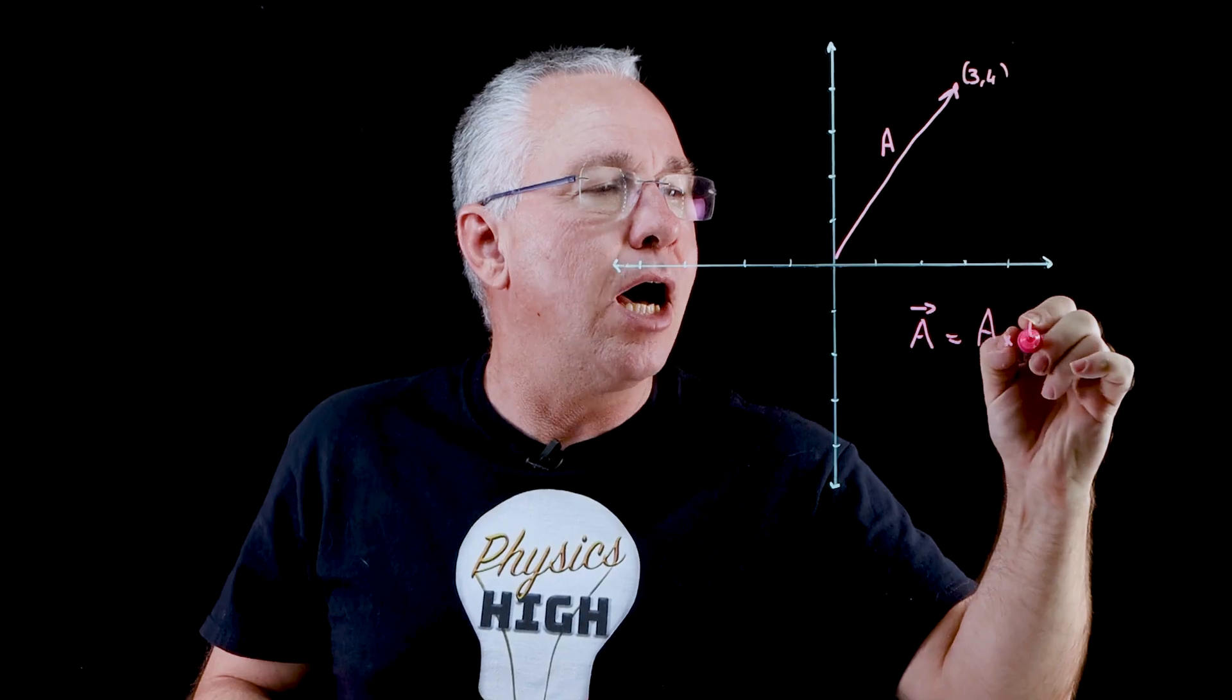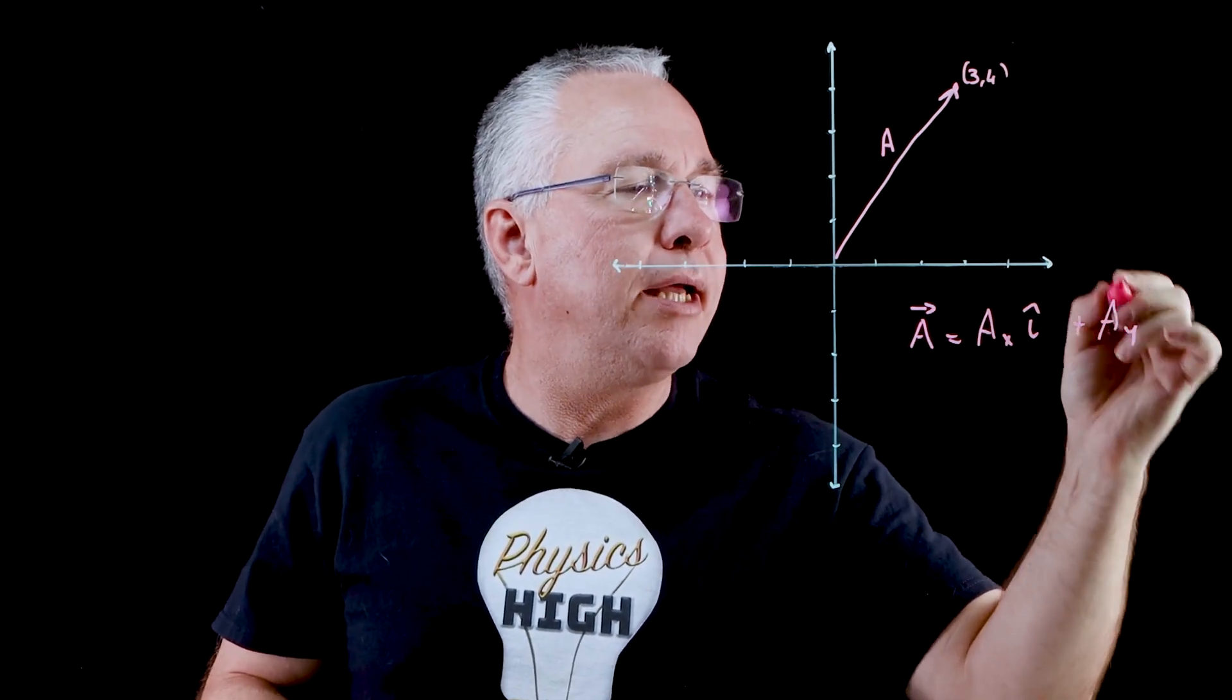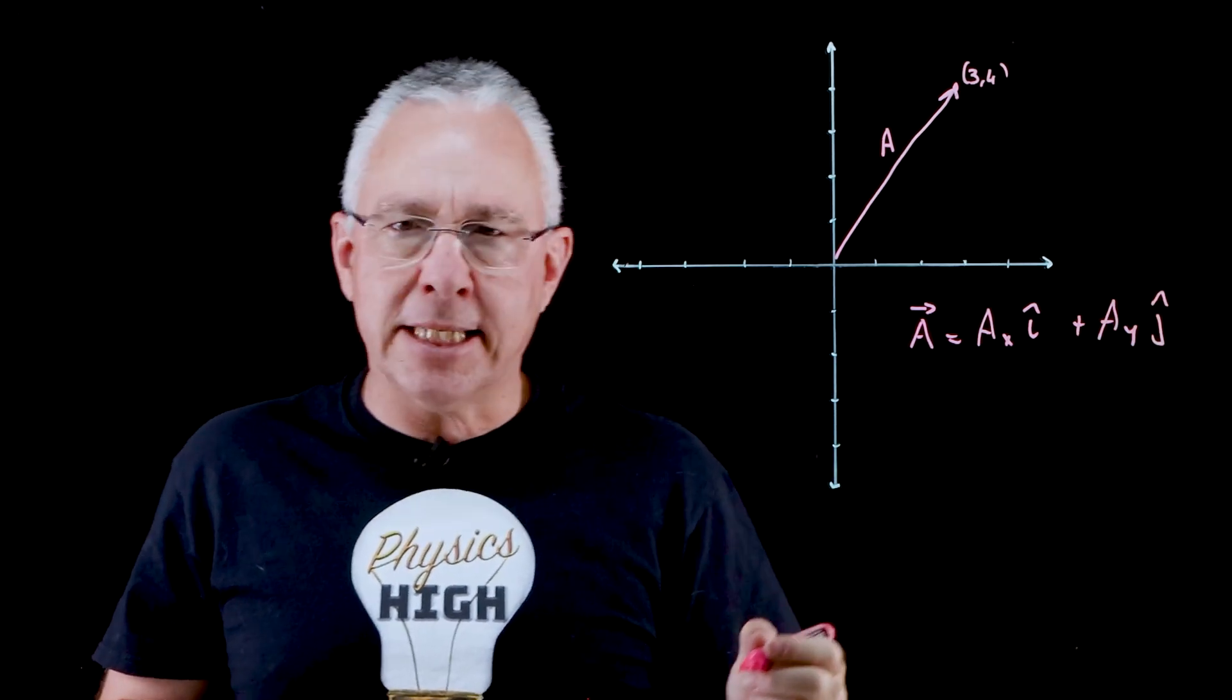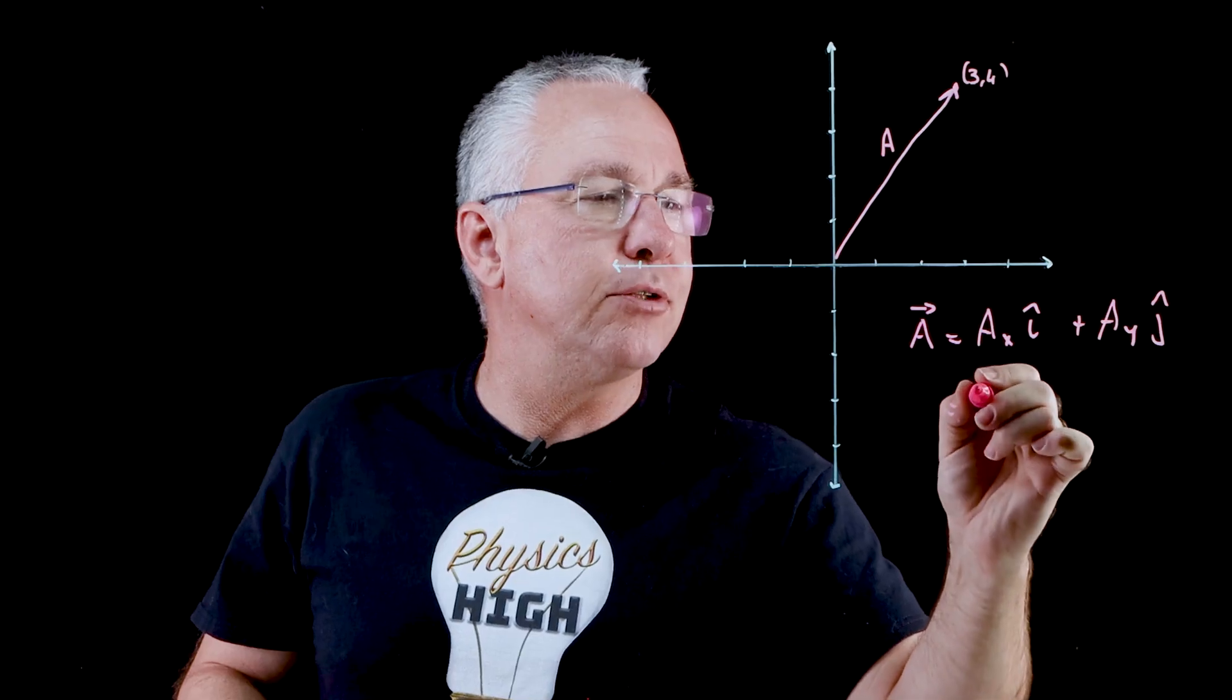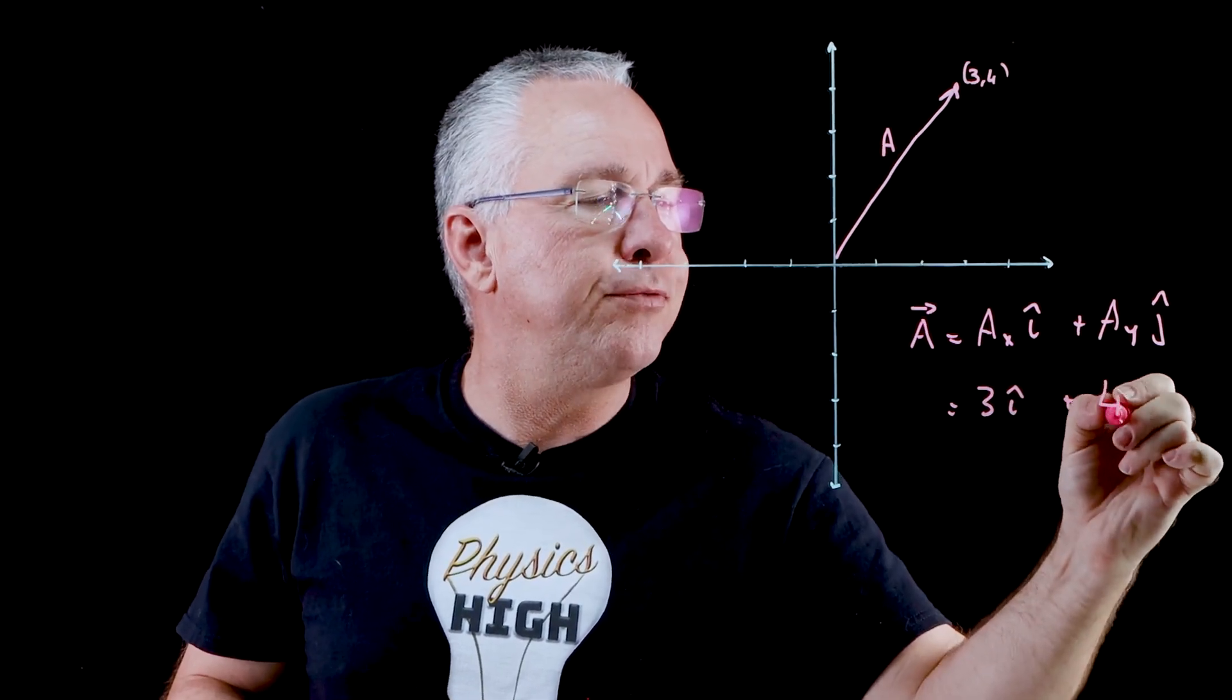So we say ax i hat plus ay j hat. In other words, this is our x component and that of course is equal to three. And then of course the other component is equal to four.